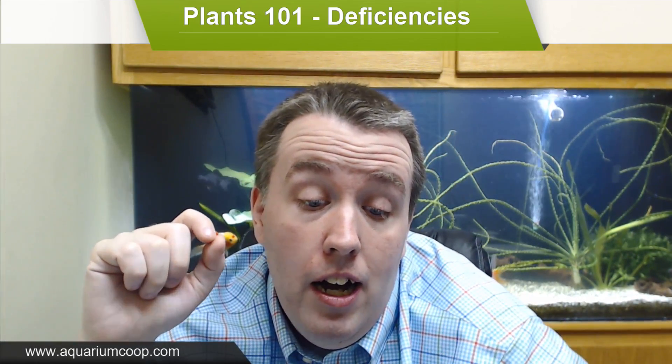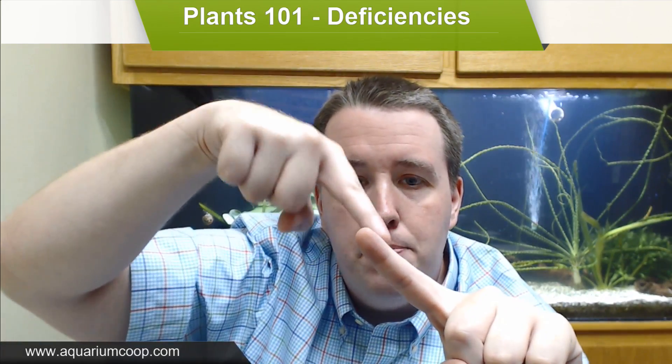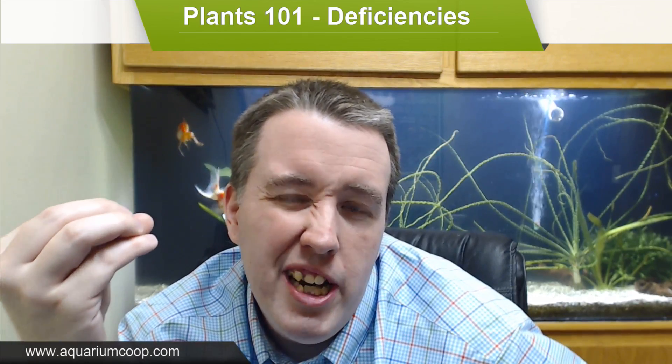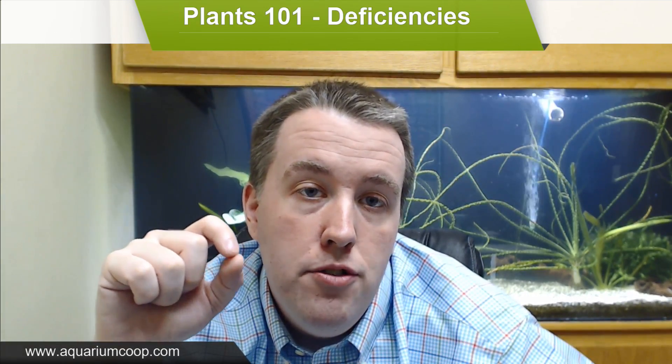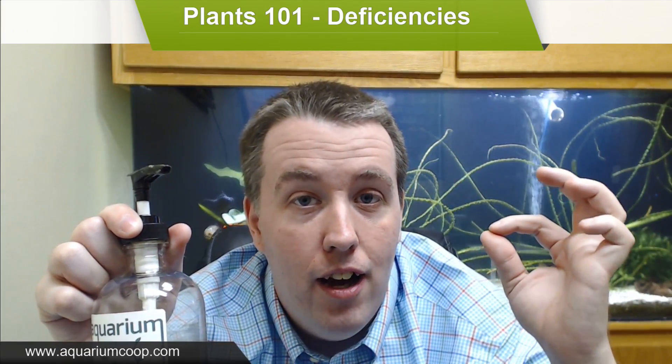Another deficiency people might run into is an iron deficiency. You also get yellowing leaves, but all the veins of the leaves will be a dark color — you can almost see the skeleton of the plant. The veins are darker but the plant in general is a lighter color, like a lime green or a little bit yellow. This is a sign that the plants are starved for iron. Adding additional iron helps. Iron is one of the harder nutrients to include in fertilizers at high levels, so typically you'll want to use a dedicated iron supplement — whether it's Seachem's or another brand — added separately.